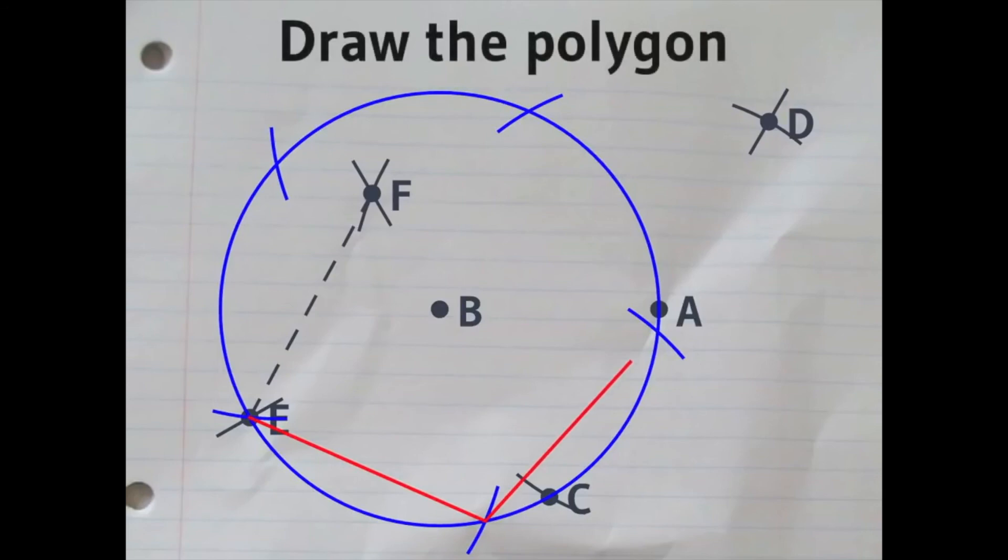So, then you draw the edges of it, and you've done it. You've constructed a regular pentagon with a ruler and a compass.